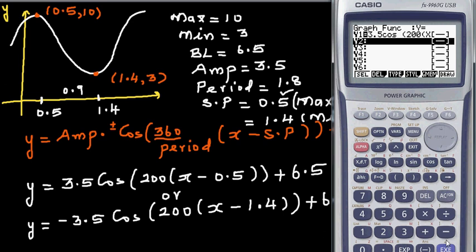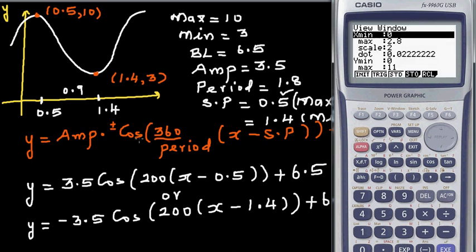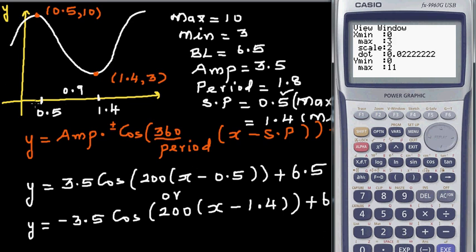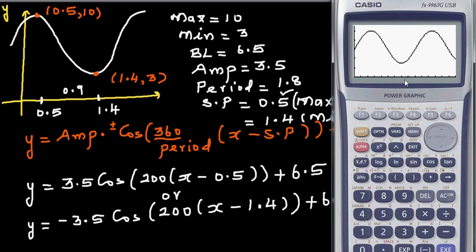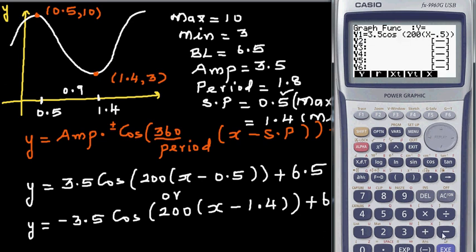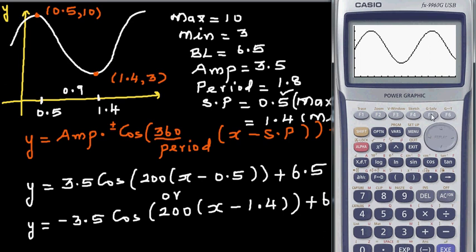Set the x-axis from 0 to 3 with scale 0.2, and y-axis from 0 to 11. Draw it and use G-Solve to confirm: the maximum is at (0.5, 10). Then change the equation to minus cosine with starting point 1.4 and verify you get the same graph.